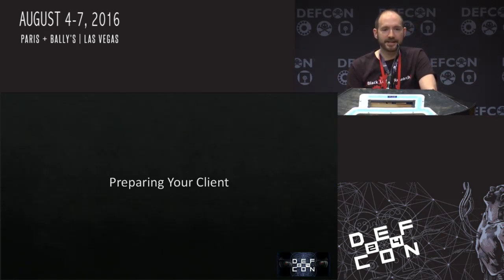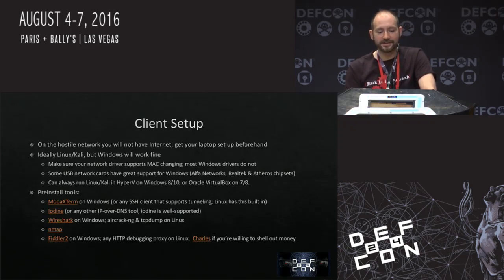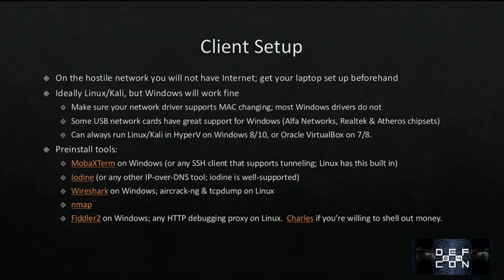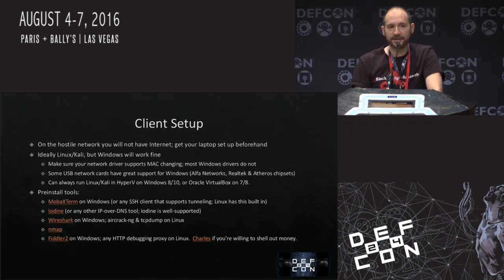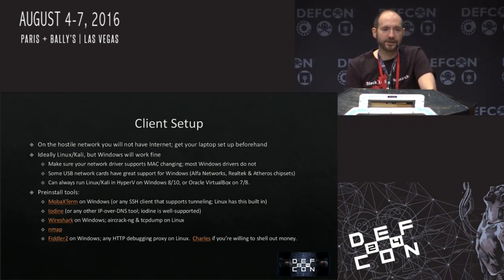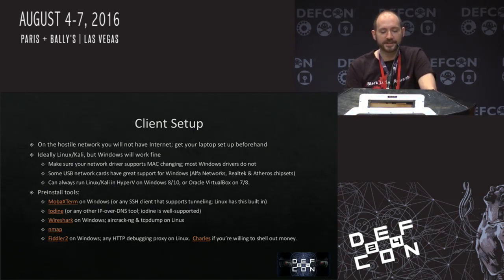Then you need to prepare your client — the laptop you're going to actually use when you want to do a bypass. On a hostile network you're not going to have internet, so you have to set all this stuff up before you're on a restricted network. Ideally you'll use Linux or Kali, but Windows will actually work fine for most of these. The only thing it won't do is MAC changing — most Windows drivers don't support changing the MAC address of your card. There are USB network cards with great support for Windows, like the Alpha Networks cards with Realtek and Atheros chipsets, which you can get in the DEF CON vendor room. You can also run Linux or Kali in Hyper-V or VirtualBox. Pre-install tools: you need an SSH client — Linux has it built in; on Windows I like MobaXterm, but PuTTY works too. Also a copy of Iodine, Wireshark on Windows or aircrack-ng on Linux, Nmap, and an HTTP debugging proxy. Sometimes you can actually take advantage of bugs in the captive portal itself.